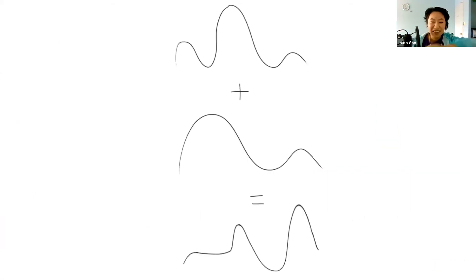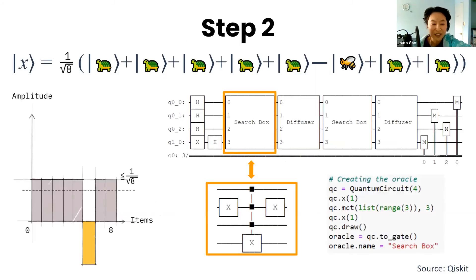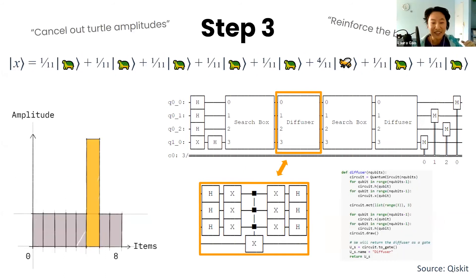When we add up two waves, at some locations the trough and the peak, which is a low point and a high point of two waves, they meet and they cancel out to make a zero amplitude. At other points, two peaks add up to reinforce each other and the peak gets taller in the resulting wave. So this is what we're gonna do in the second step of our circuit. We will use the search box to multiply the bee's amplitude by negative one, which essentially flips it over. Then in the third step, we use a sequence of quantum gates called the diffuser, which essentially flips the bee's wave back over.